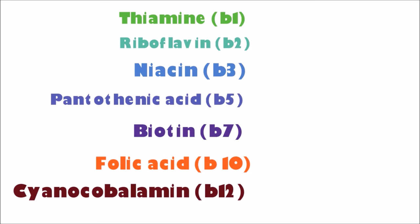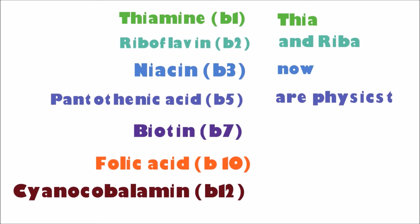We are going to learn a trick. We have the names of two girls: Thea and Riba. These are names of two girls whose father cheered them to become physicists. So the story is they became physicists because their father motivated them. Thea is for Thiamine, Riba is for Riboflavin, Now is for Niacin.